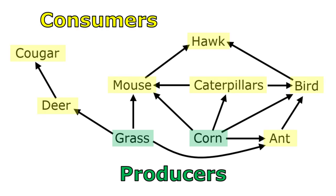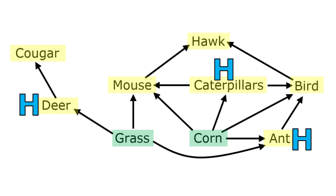The other organisms in this food web are all consumers. We can be more specific about what types of consumers we have. We can see that we have herbivores that eat only plants. The deer, caterpillars, and ants are all herbivores.